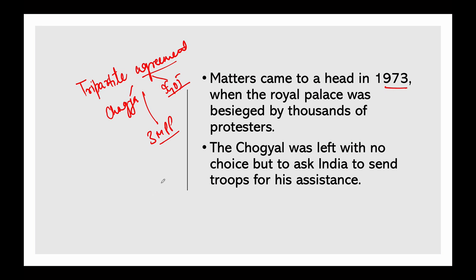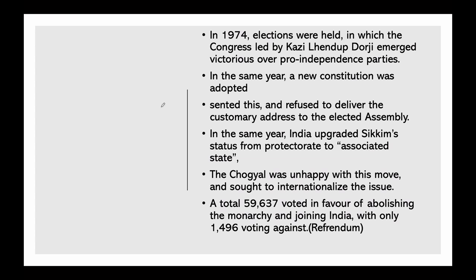In 1974, elections were held in which the Congress, led by Kazi Lhendup Dorji, emerged victorious over pro-independence parties. In the same year, a new constitution was adopted which restricted the role of the Chogyal to a titular post. The Chogyal resented this and refused to deliver the customary address to the elected assembly. In the same year, India upgraded Sikkim's status from protectorate to associated state.